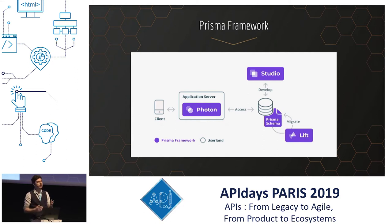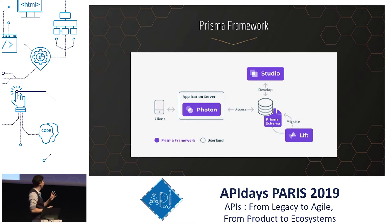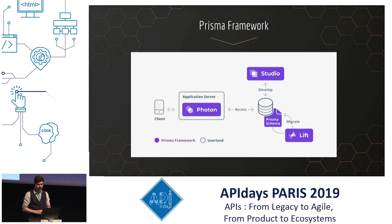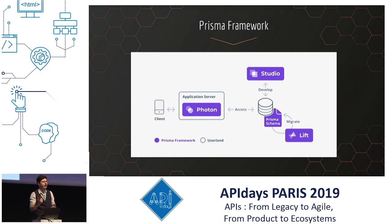At the moment, they are working on three tools: Photon, Studio, and Lift. Photon is an auto-generated database client for JavaScript and TypeScript. You can consider it an ORM, but it's more accurately described as a query builder for your database. We'll talk more about that later.